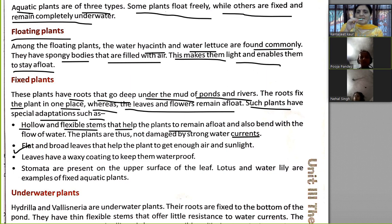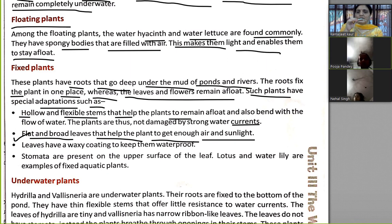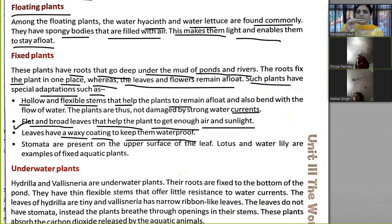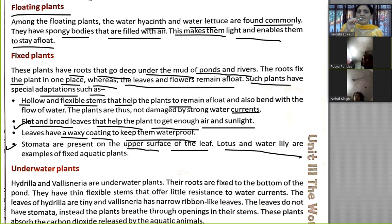Fixed plants also have flat and broad leaves that help the plant get enough air and sunlight. Leaves have a waxy coating to keep them waterproof. Stomata are present on the upper surface of the leaves. Lotus and water lily are examples of fixed aquatic plants.